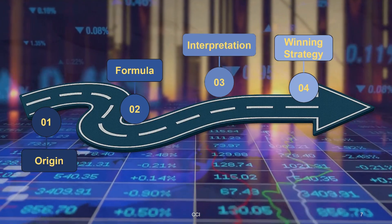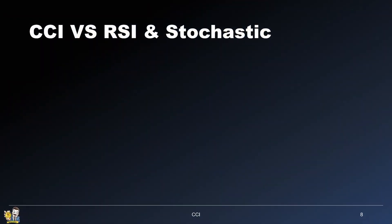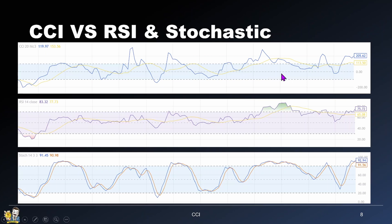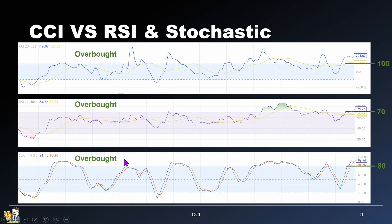Let's talk about how to interpret the CCI. First, we need to compare it with the RSI and the stochastic. All three are momentum oscillators, but there are key differences. For overbought levels: CCI is typically above plus 100, RSI is above 70, and stochastic is above 80. The same variation applies for oversold levels.